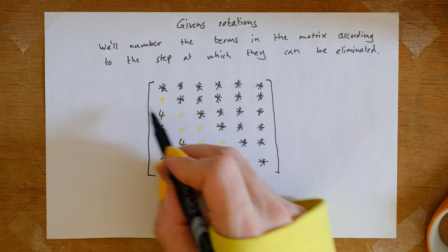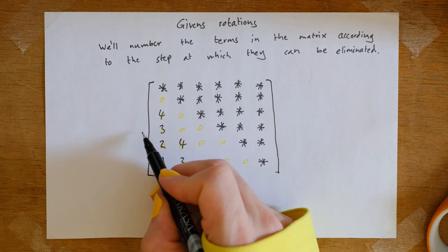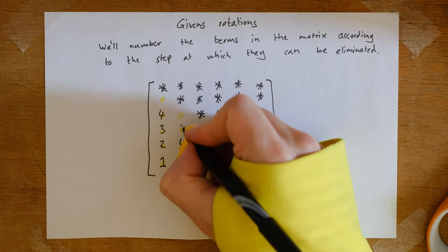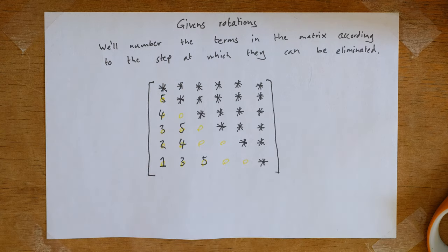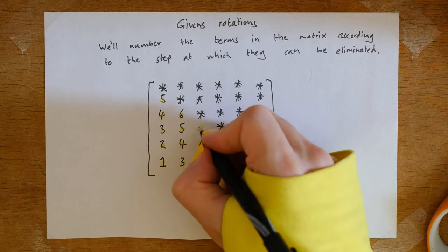We could then eliminate these two terms simultaneously. This term, we only need to look at the 2nd and 3rd rows. This term, we only need to look at the 4th and 5th rows. And on the 5th step, we can eliminate 3 terms simultaneously, and we can proceed in the following fashion.